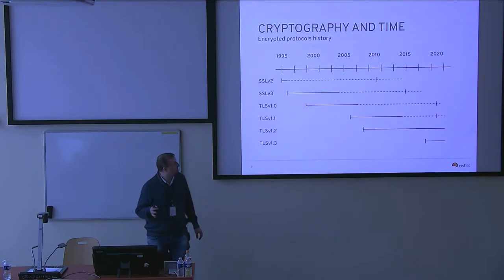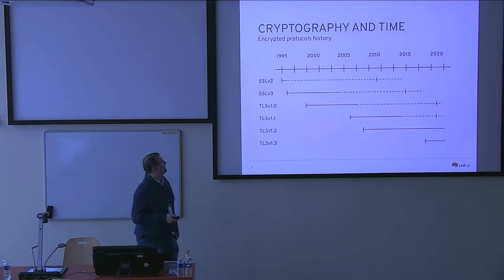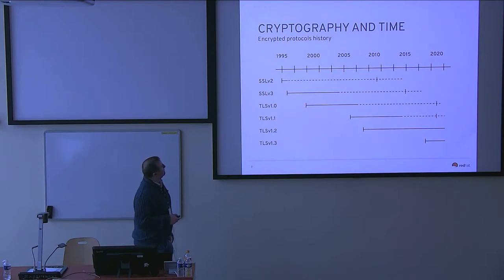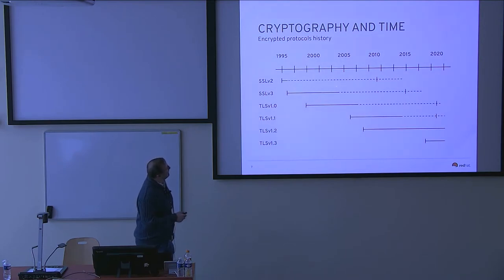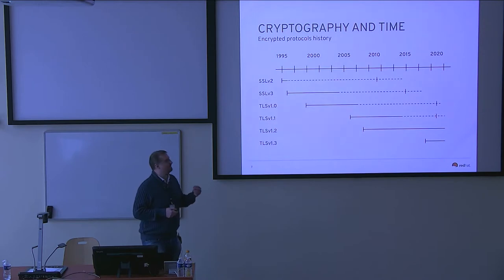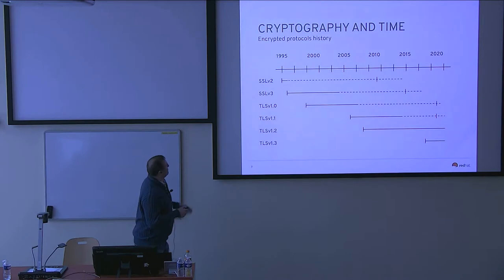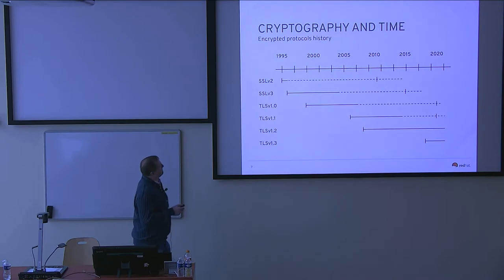This is a timeline of security protocols, the major one being SSL and then later TLS. This shows when the standard was published and when it was deprecated. And this kind of line shows you when it was insecure. So SSL was insecure — SSLv2 was insecure since the beginning, but it was anyway deployed.